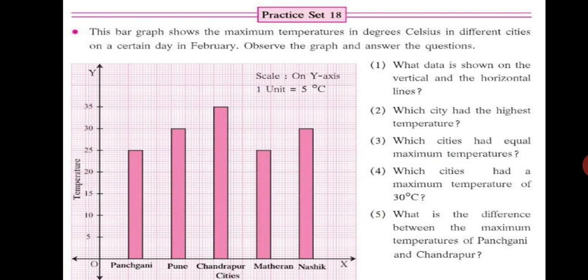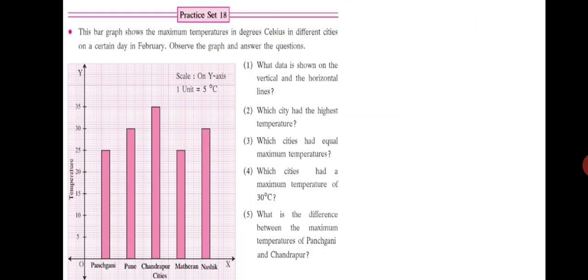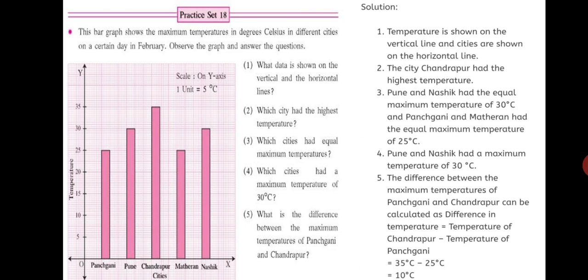Observe the graph and answer the questions. So, first you see the x axis is marked with cities. Y axis is marked with temperature. And scale is given 1 unit is equal to 5 degree Celsius. So, now we can read the temperatures very easily. Let us have a look at the questions. First, what data is shown on the vertical and horizontal lines? So, let us discuss this in the solution set itself. Tell me what data you can see in the vertical and the horizontal lines? Think about it. Vertical means the straight and horizontal means the bottom line, the x axis. So, on y axis you see the temperature and on x axis you see the names of the cities. So, temperature is shown on the vertical line that is y axis and cities are shown on the horizontal line that is x axis.